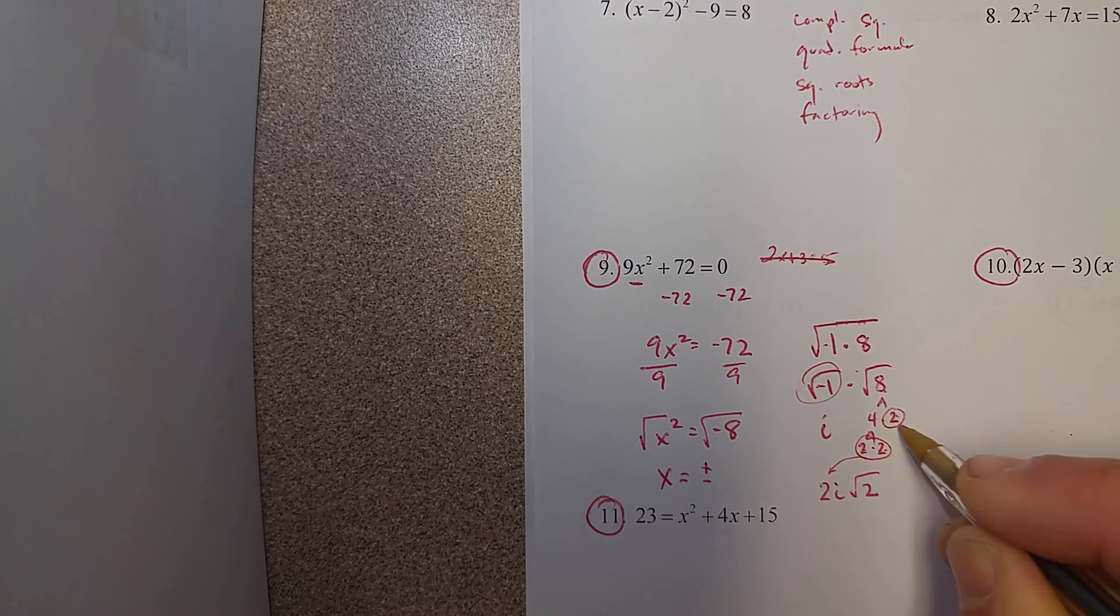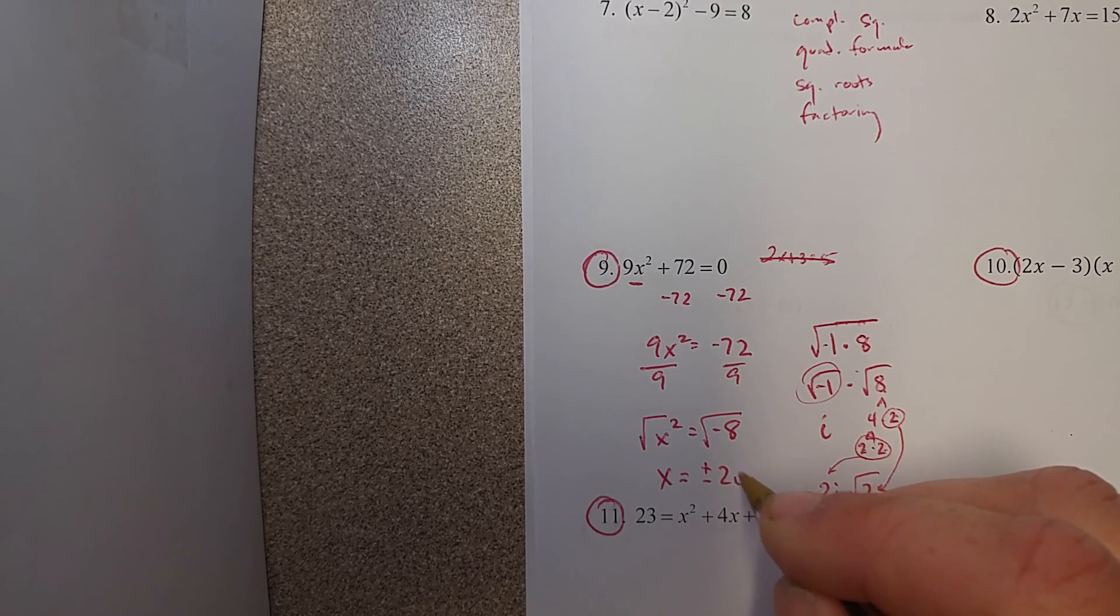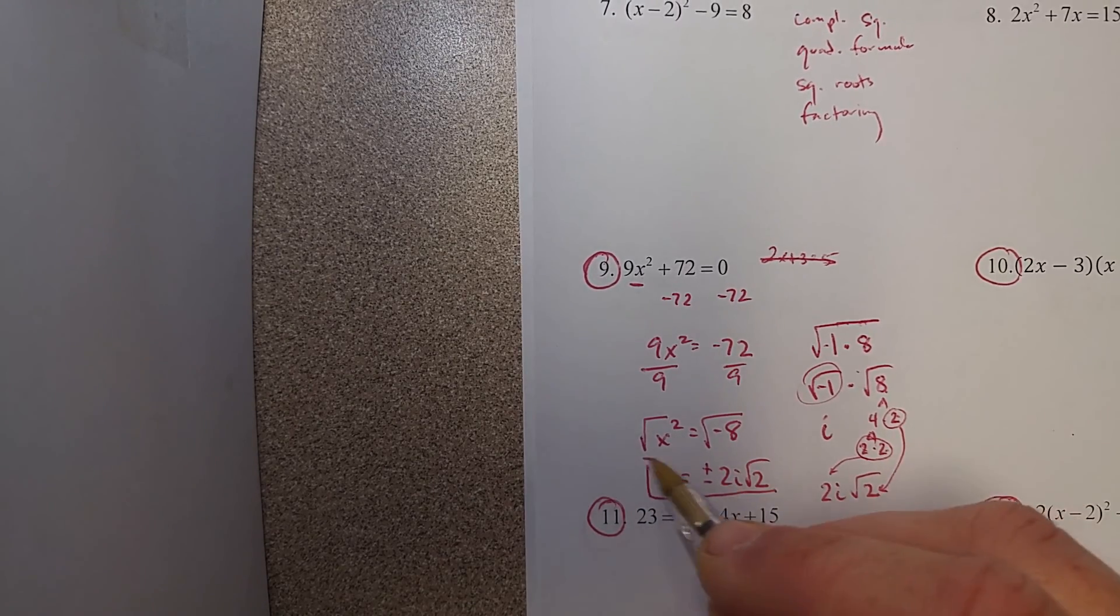This 2 comes out, this 2 is left under the radical. Remember it goes with the plus or minus. So we have 2i√2, and x equals plus or minus 2i√2.